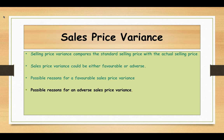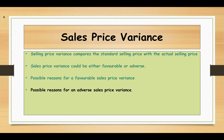The possible reasons for an adverse sales price variance include: severe competition preventing companies from selling at higher prices; a fall in demand, perhaps due to introduction of new products by competitors; poor quality products; government regulation restricting price increases; economic conditions like depression where people cannot afford higher prices; or poor planning and insufficient market research.